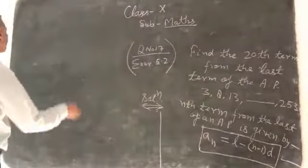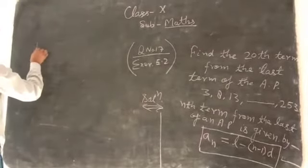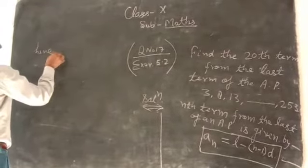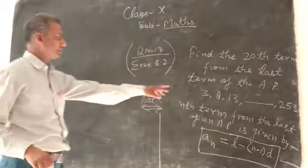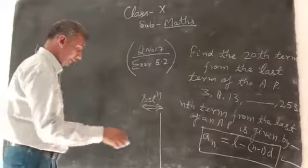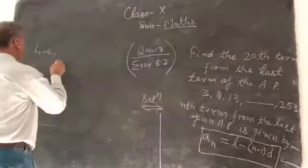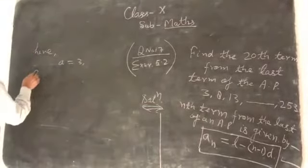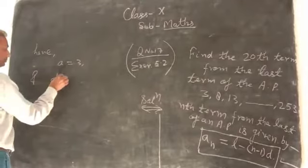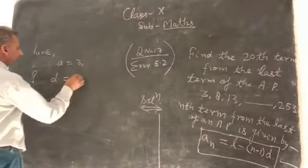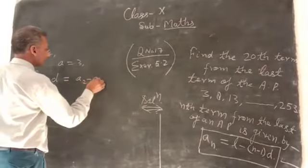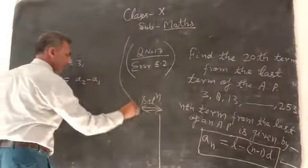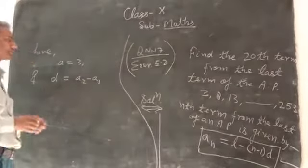So here AP, from AP, you give AP. First, what is the formula? So first time, what we have to do? A is equal to 3. And common difference is d. What is A2 minus A1?